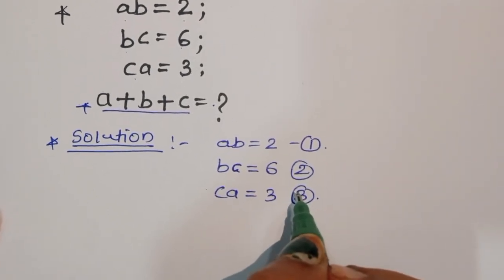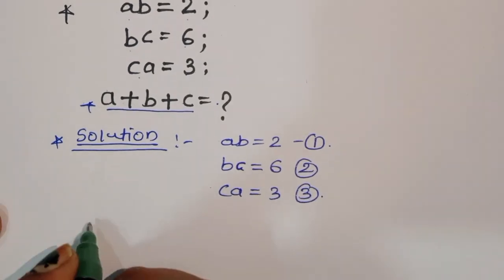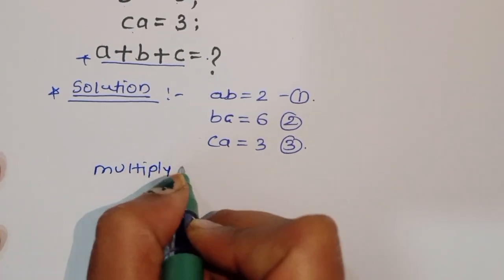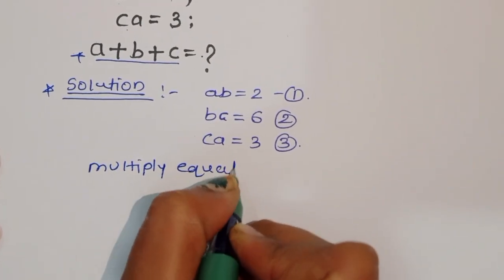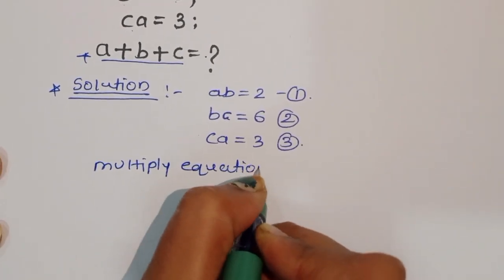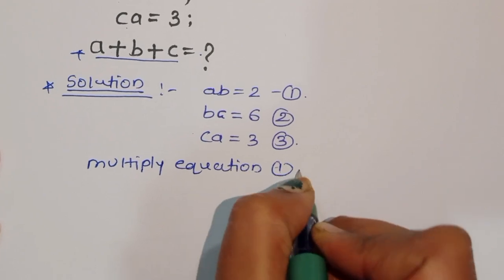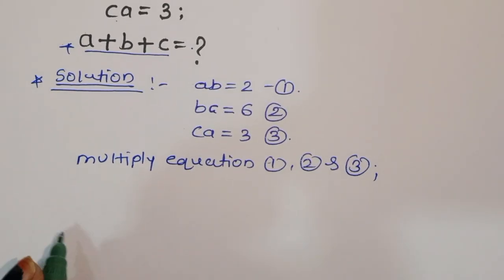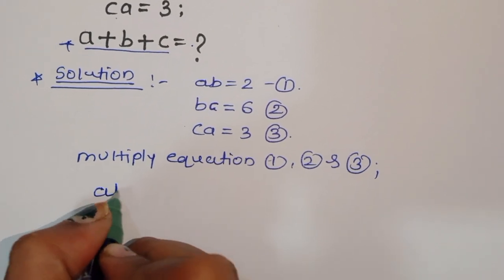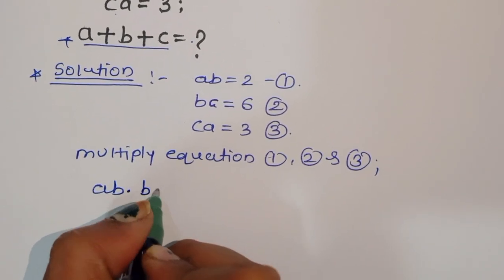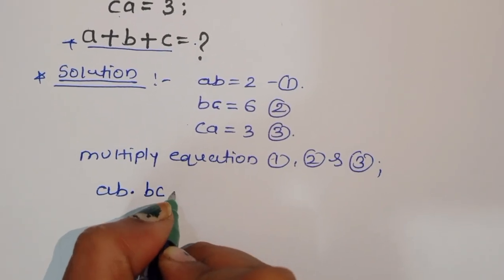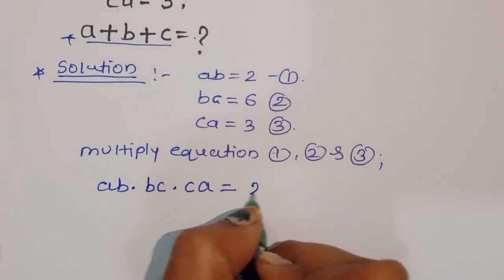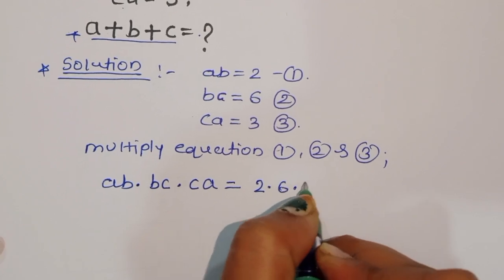Now we have these 3 equations, so we can multiply equation 1, 2, and 3. Then we will get: ab times bc times ca is equal to 2 times 6 times 3.